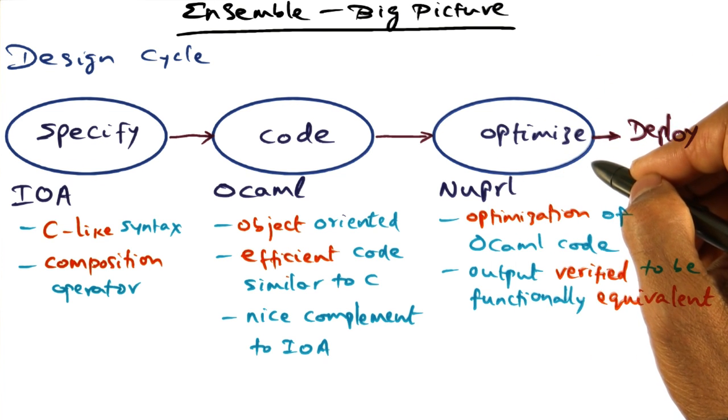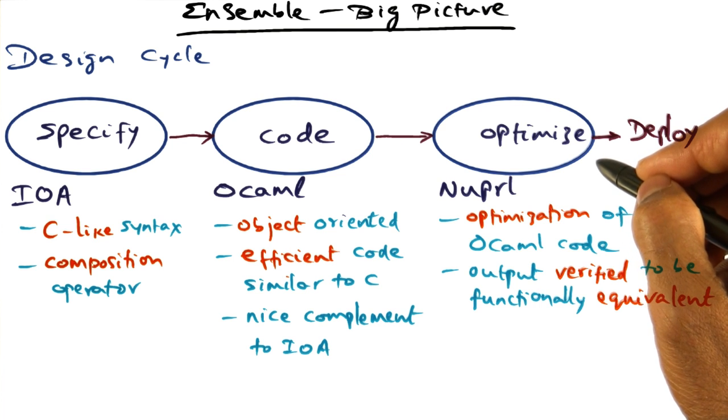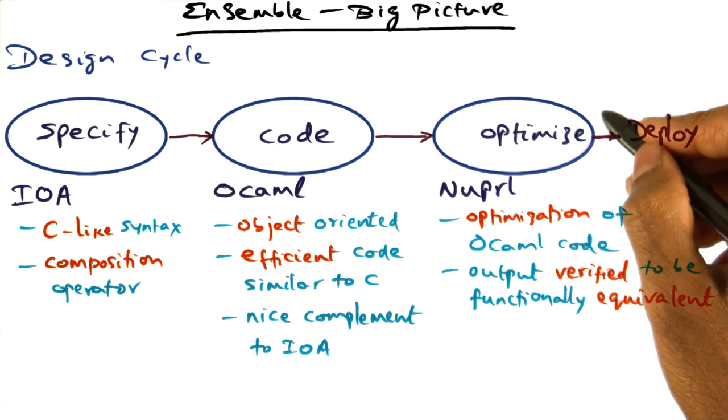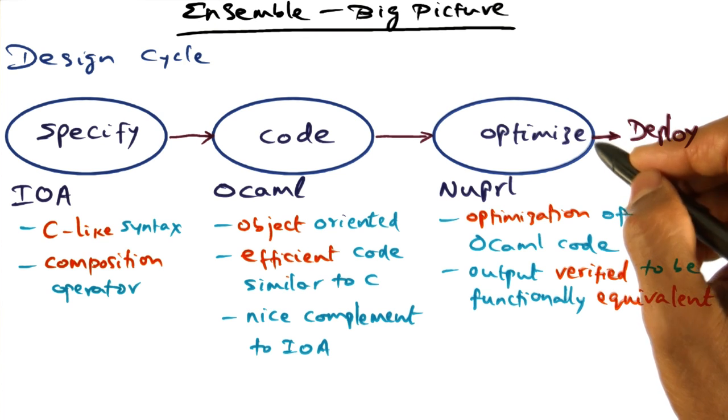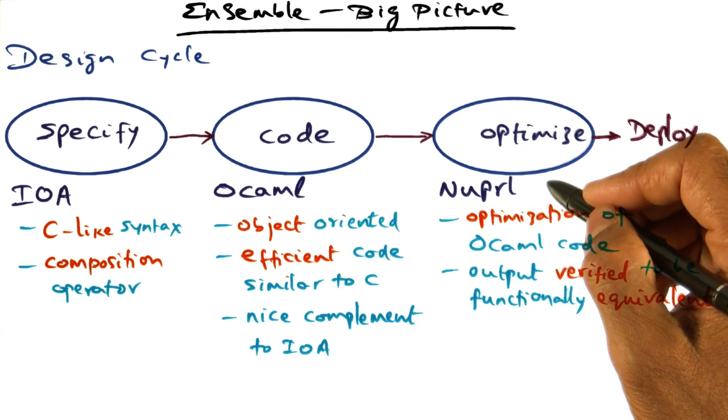And the way it does that is a little bit beyond the scope of this course. It uses a theorem proving framework in order to do this and verify through theorem proving that the resulting code that is generated is equivalent to the input code which was unoptimized.